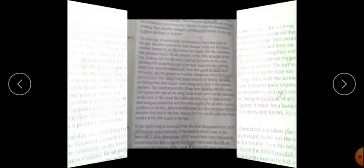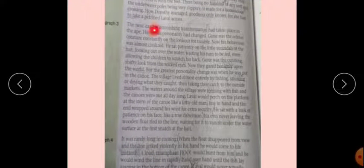Next paragraph 3. The next day an astonishing transformation had taken place in the ape. Astonishing means surprising. His whole personality had changed. Gone was the odious creature constantly on the lookout for trouble. Odious means foolish creature. Now his behavior was almost civilized. Civilized means well-mannered. He sat patiently on the little veranda of the hut looking out over the water, waiting his turn to be fed, even allowing the children to scratch his back.